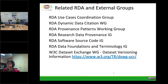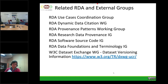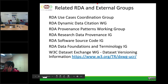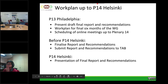Other RDA interest groups and working groups have approached us because our work is relevant to them — including provenance patterns, software source code, and data foundations and terminology. When working with an international group, we will need to get clear on vocabulary. Working groups in RDA are given 18 months and they're quite strict about it. We're heading to our 12-month mark at Philadelphia in a couple of weeks, where we'll be burning the midnight oil to finish the draft report. Before Helsinki — Plenary 14 in September — we will have to submit the final report and recommendations so we can do a proper handover.